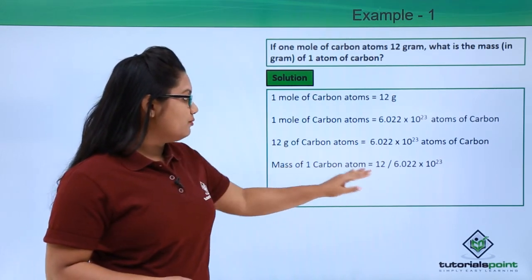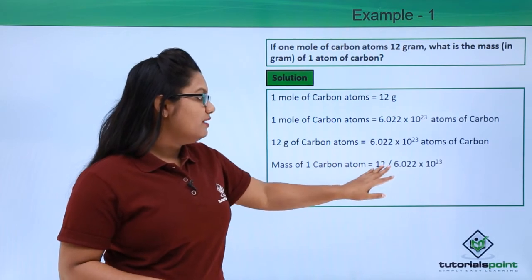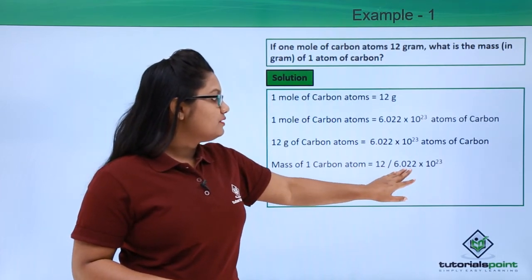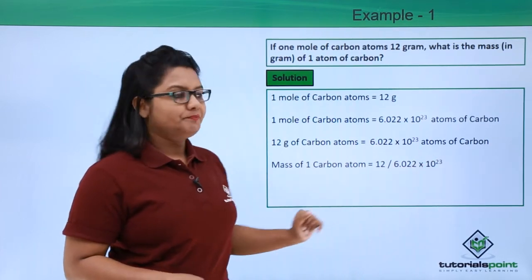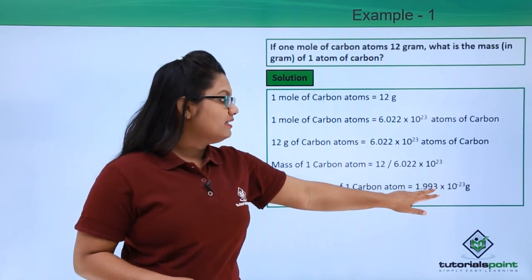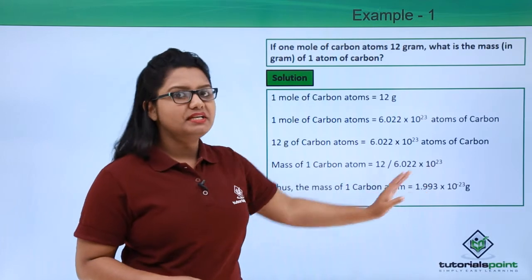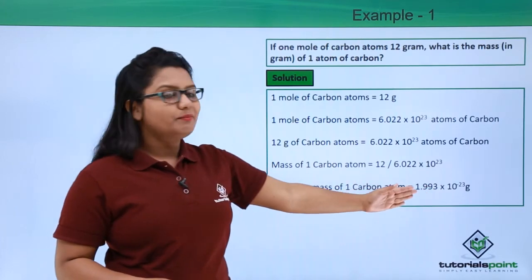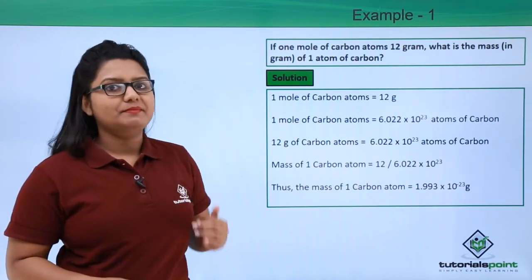So the mass of one atom of carbon becomes 12 divided by 6.022 × 10^23, which yields 1.993 × 10^-23 grams. So this is the mass of one atom of carbon in grams.